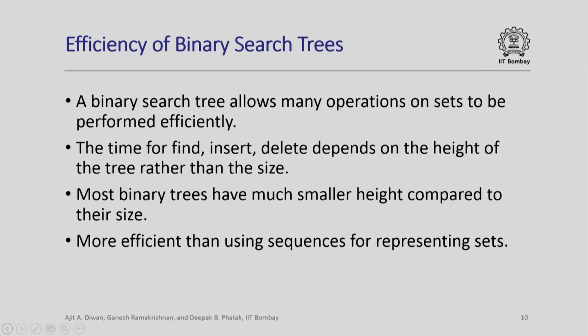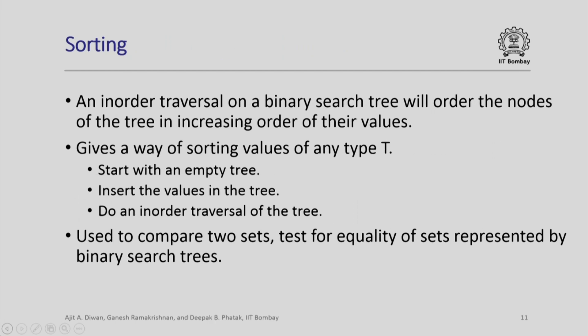Whereas if you had used a sequence for representing a set, the number of recursive calls would have been proportional to the length of the sequence — the number of elements in the set. Binary search trees give a more efficient implementation for these operations and also a more convenient way of representing them. An in-order traversal of a binary search tree orders the nodes in increasing order of their values, which is useful for sorting. To check whether two sets are equal, do an in-order traversal on each, compare the resulting sequences of values, and if they match the sets are equal.